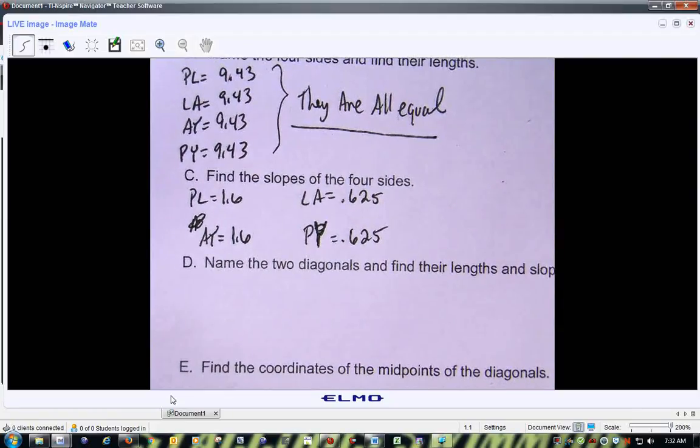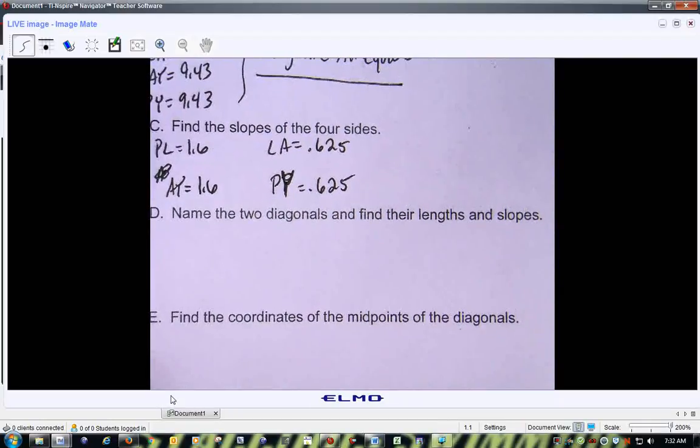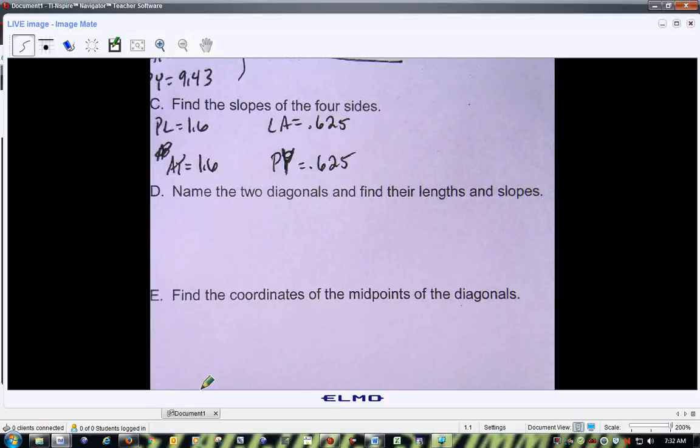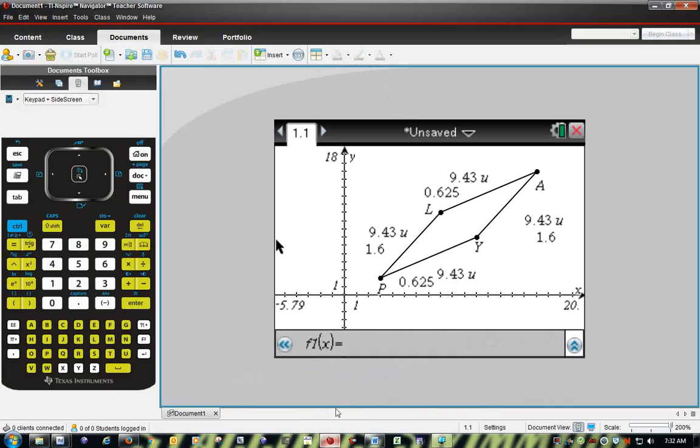Now, we need to name the two diagonals and find their lengths and slopes. So let's go back into, and we're going to do the midpoints. We're going to do D and E at the same time. So let's go back to our picture.